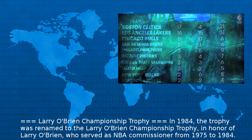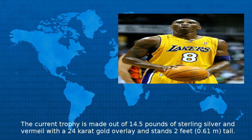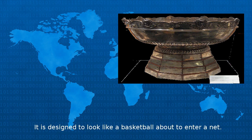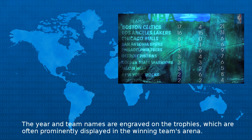In 1984, the trophy was renamed to the Larry O'Brien Championship Trophy, in honor of Larry O'Brien, who served as NBA commissioner from 1975 to 1984. The current trophy is made out of 14.5 pounds of sterling silver and vermeil with a 24-carat gold overlay and stands 2 feet tall. It is designed to look like a basketball about to enter a net. The year and team names are engraved on the trophies, which are often prominently displayed in the winning team's arena.